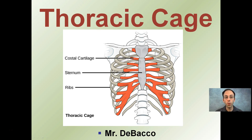Here I'm going to provide a brief overview of the thoracic cage. Some of the main components here are costal cartilage, indicated in red. The sternum is that center bone here, and then the ribs located on the end here.